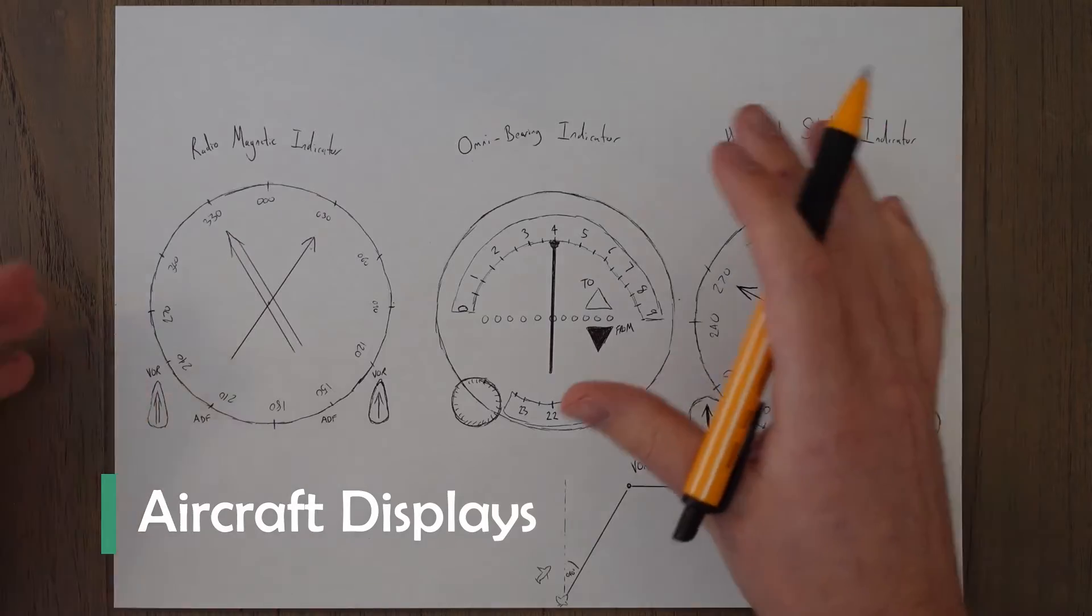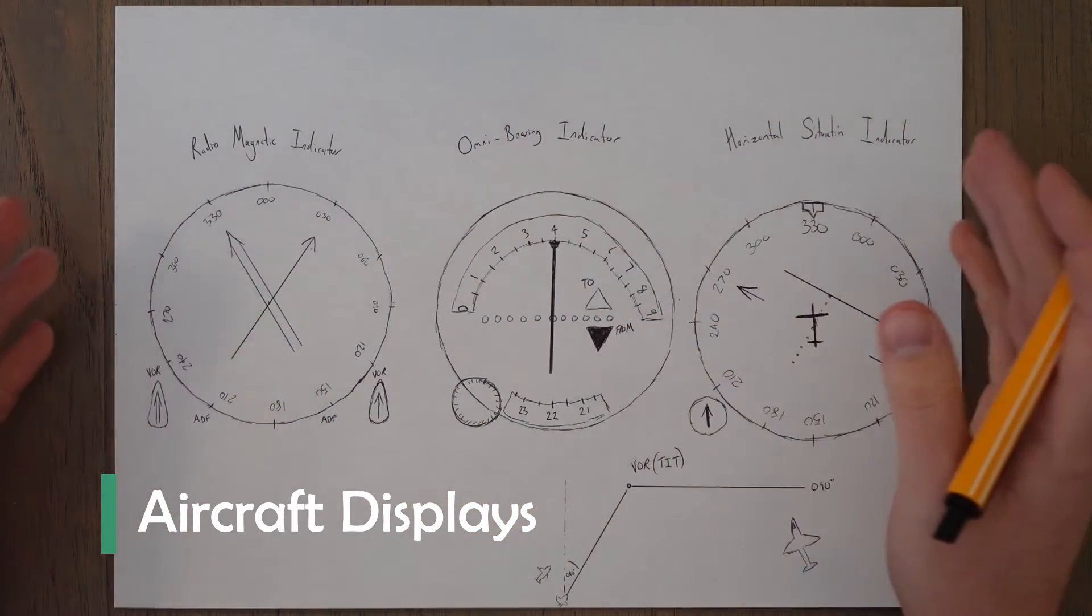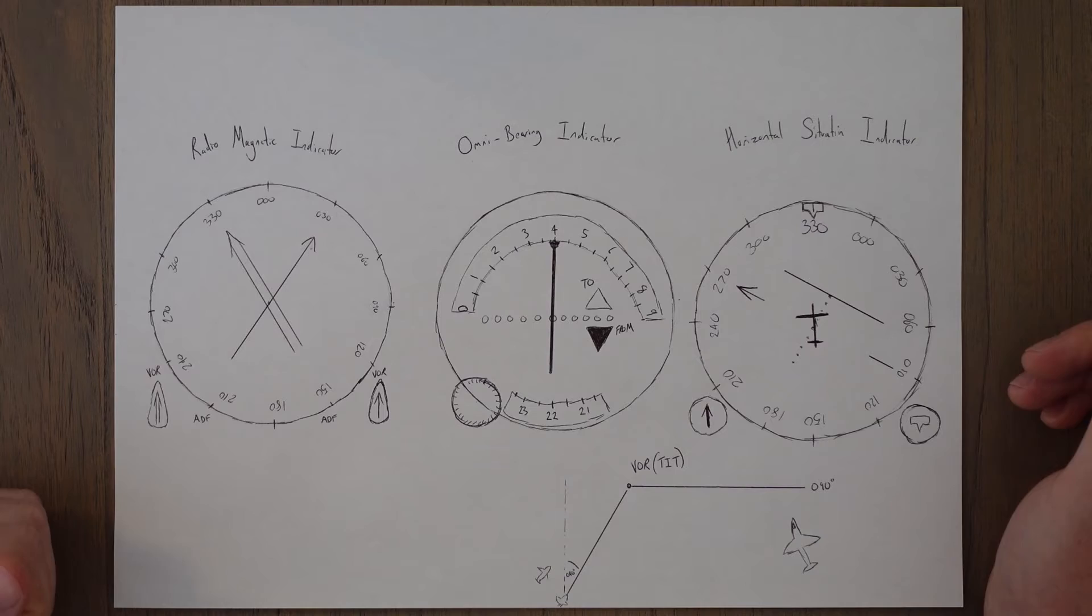Once we have the signal in our aircraft, we want to display it in one of three primary ways.